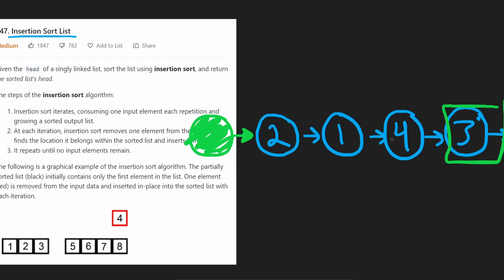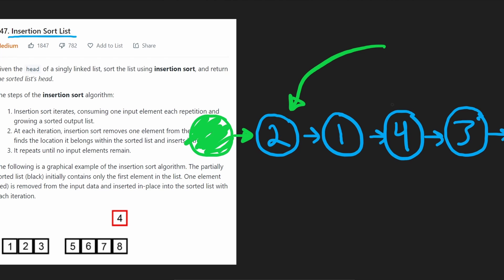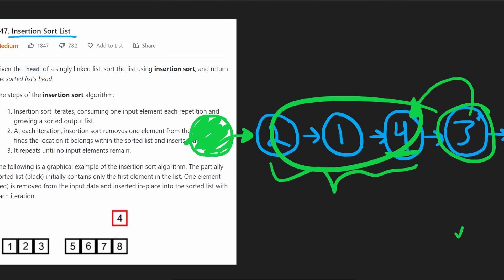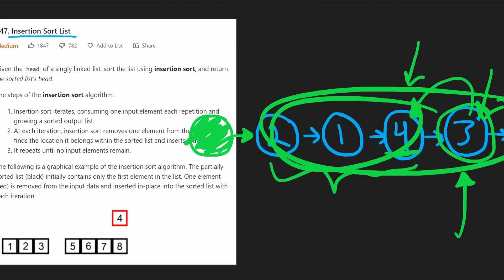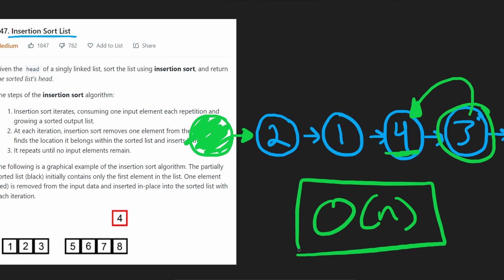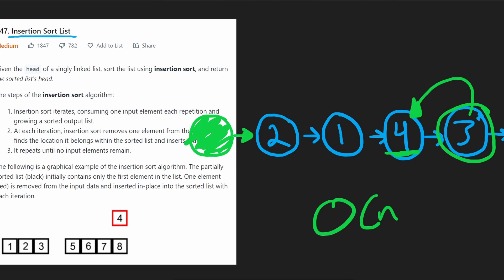With singly linked lists we can't go backwards, so we always start at the beginning. However, one check we can still make before iterating is to verify whether the current node is already greater than or equal to the previous node's value. If so, it's already in the correct position, since we assume the previous portion is sorted. This check keeps the best case O(n) while the worst case remains O(n²).